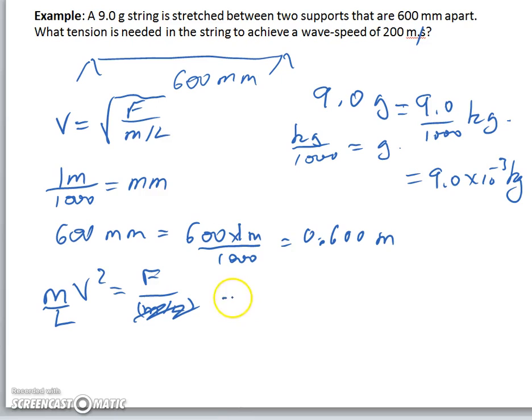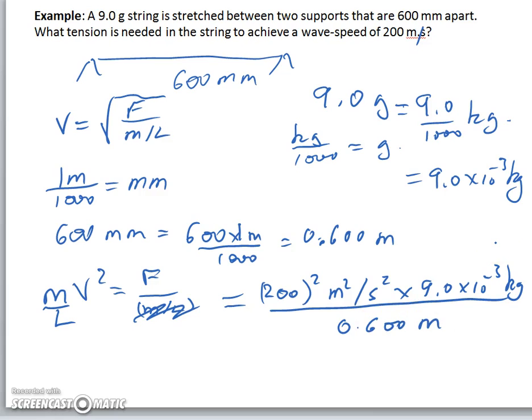So the force or tension that we require is V squared, which is 200m squared per second squared, times the mass of 9.0 times 10 to the minus 3 kilograms, divided by length 0.600 meters.